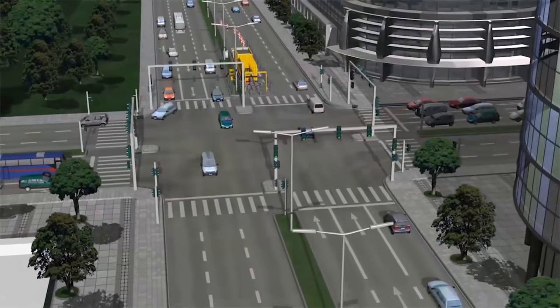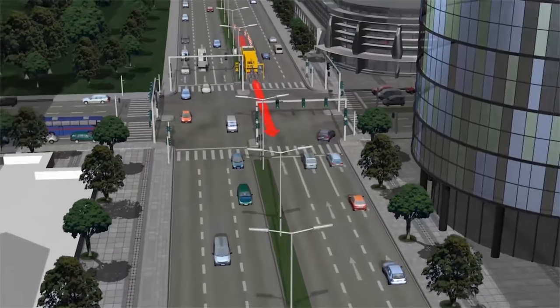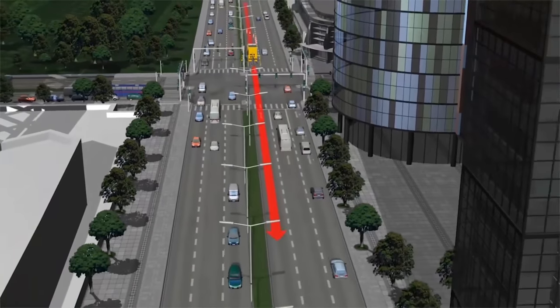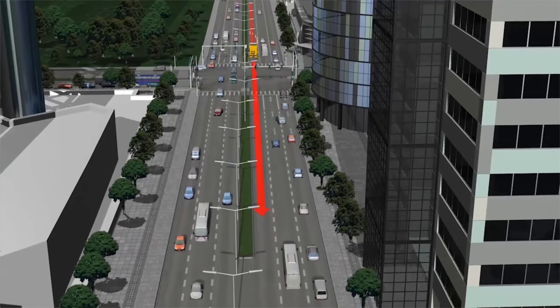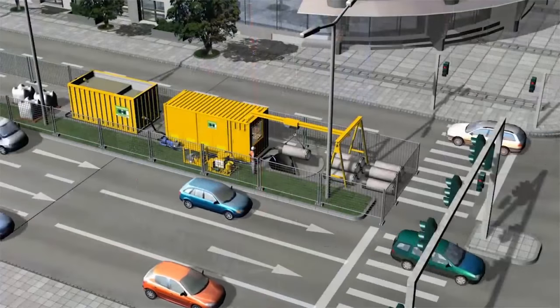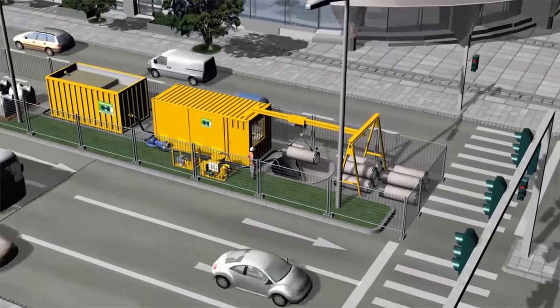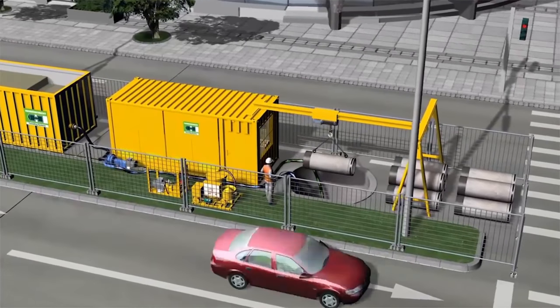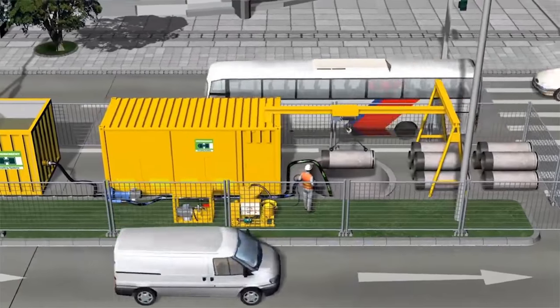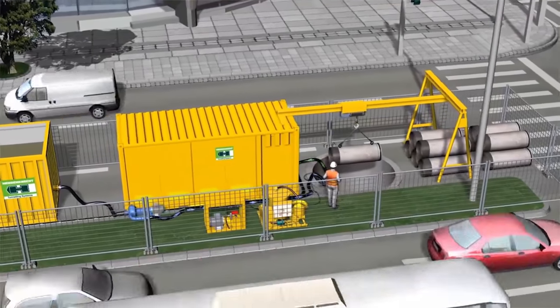In our example, 150 meters of sewer pipe are to be jacked from the launch shaft to the reception shaft. At the first stage, the area around the starting shaft is cordoned off to divert the traffic. Due to the compact design of the machine and the small diameter of the starting shaft, there will only be minor disruption to the traffic flow.